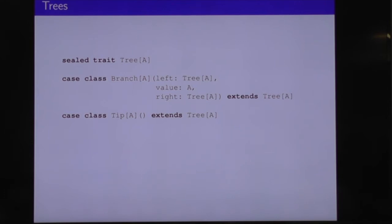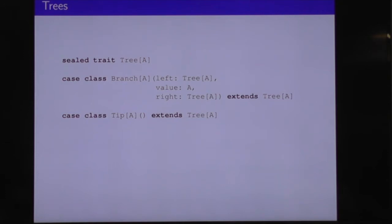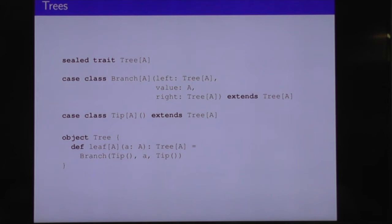Let's move on to a more serious example — trees. This is an algebraic data type with two constructors. The name of the type is tree. Its two constructors are tip, which takes no parameters — it's like an empty leaf — or branch, which has a left subtree, a value at this node of type A, and a right subtree. A is the type that the tree is parameterized over. We can have a convenience function called leaf, which takes an A and constructs a branch with two empty tips.